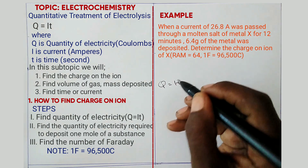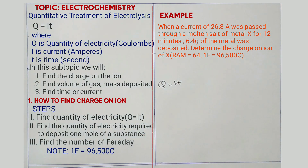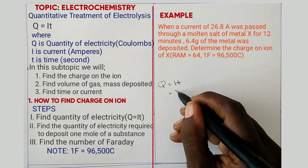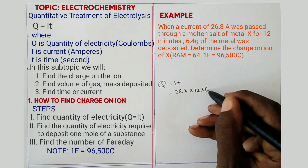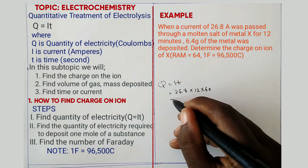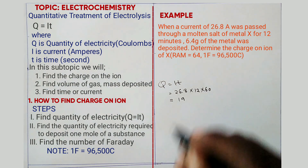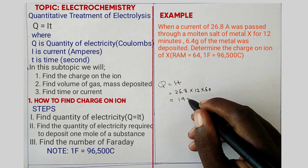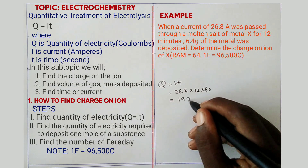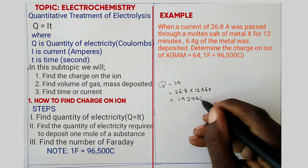The current given in the question is 26.8 A, and the time given is 12 minutes. So therefore the current is 26.8, times 12, times 60. If you multiply that, you get 19,296 coulombs. That is your step one.